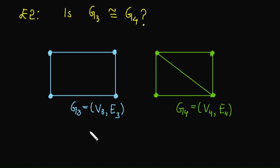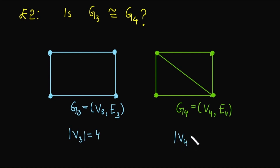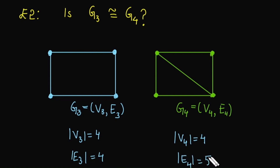Now let's check whether G3 is isomorphic to G4. First we count the number of vertices: G3 has 4 and G4 also has 4, so the vertex count is the same. Now count the number of edges: G3 has 4 edges whereas G4 has 5 edges. The count of edges is not the same, so clearly G3 is not isomorphic to G4.